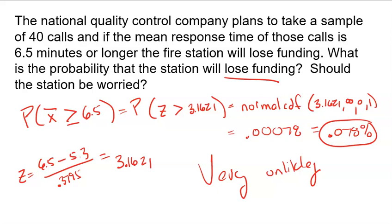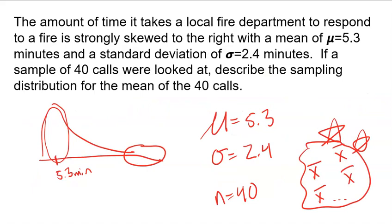So pretty good problem to walk through here. Pretty easy. I mean, it's so simple. Remember, all you needed to build this model was the mean of 5.3, the standard deviation of 2.4, and the sample size of 40.